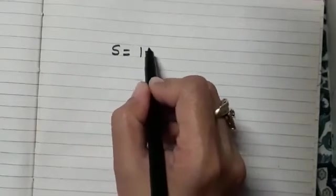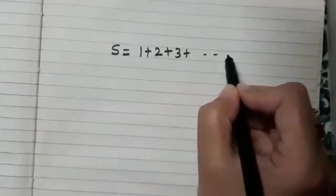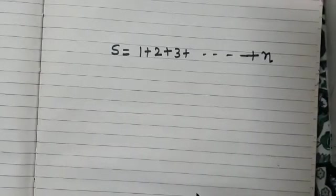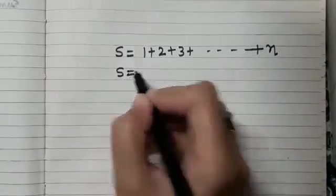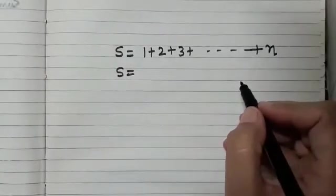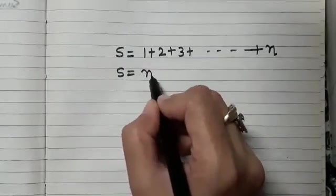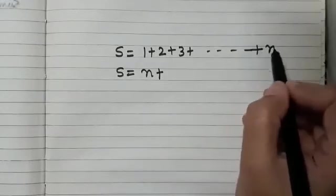Just pay attention. So I am writing here as S is equal to 1 plus 2 plus 3. And we need to find the sum of first n natural numbers. That means it will go up to n. Using the same trick, which Gauss used, we can write S is equal to n plus, can you tell me what will be the term previous to this?